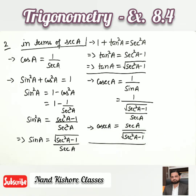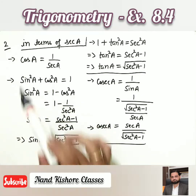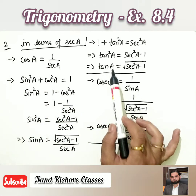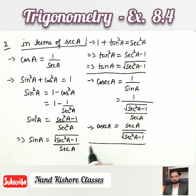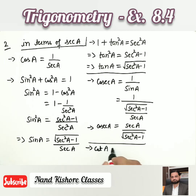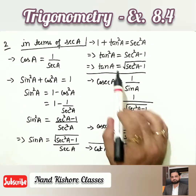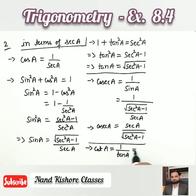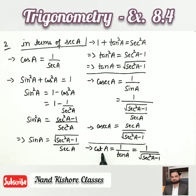We are done with cos A, sin A, tan A, and cosec A. The last one is cot A. Since cot A = 1/tan A and tan A = √(sec²A − 1), we get cot A = 1/√(sec²A − 1). So cotangent A is also expressed in terms of sec A.